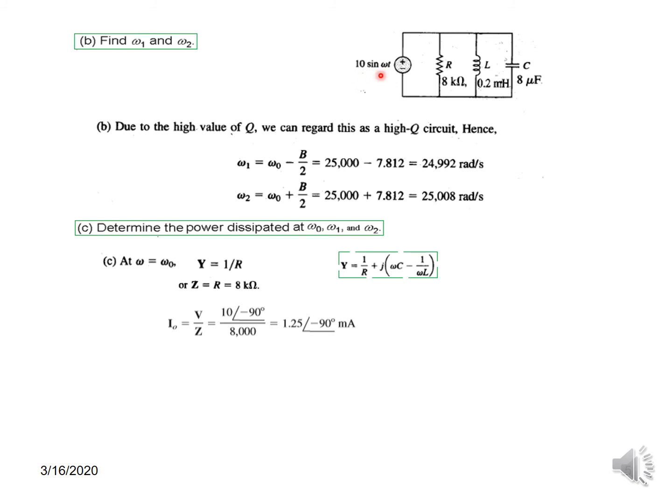how to write 10 sin into phasor form. This will become actually 10 sin(ωt) will become 10 cos(ωt - 90°), and then once it is in cos form then we can write in phasor form. So the phasor will be 10∠-90° divided by Z, so this is the current.